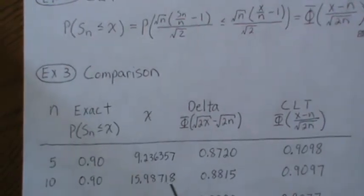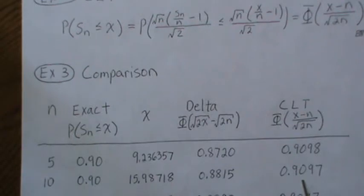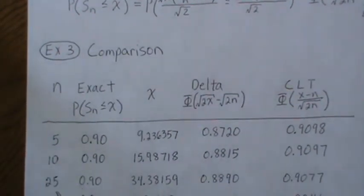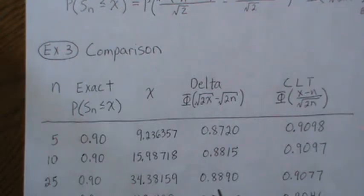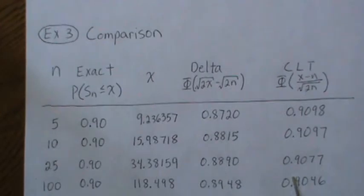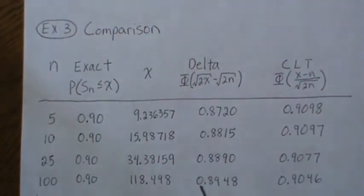The delta method gives us 0.88, Central Limit Theorem is 0.90. Increase to 25, we're getting a little bit closer: 0.889, this stays the same, actually improves a little bit to 0.90.